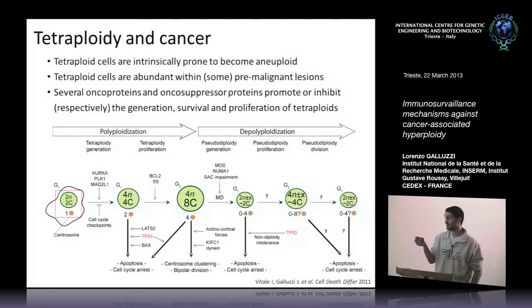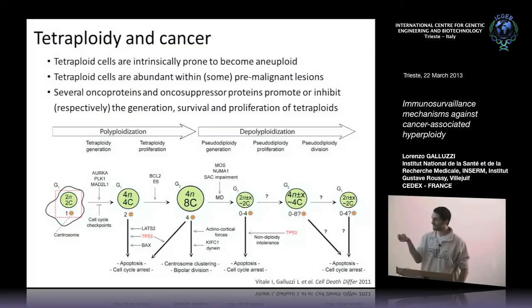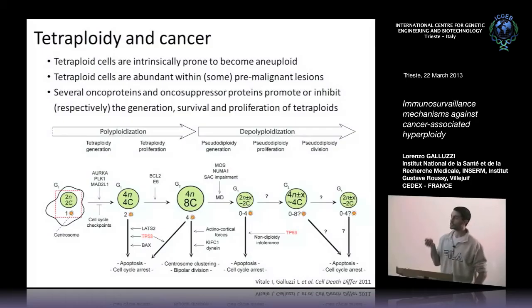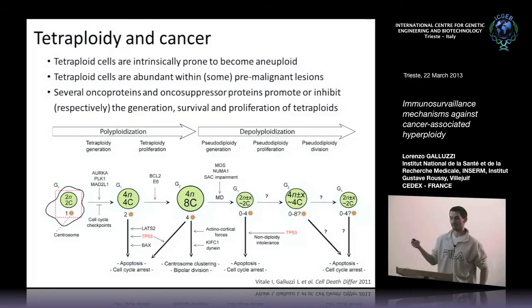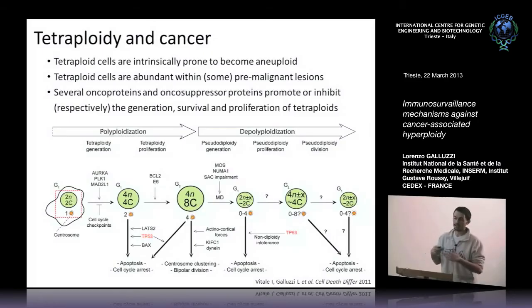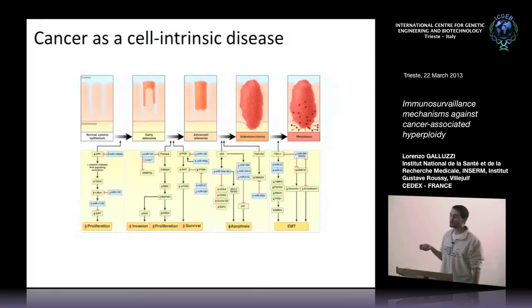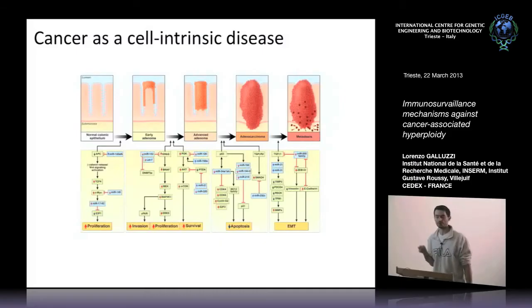An important thing to mention here is P53. As you probably know, P53 is a central regulator of oncogenesis — it's a tumor suppressor, and it is deleted, mutated, or inactivated in more than 50% of all cancers. The absence of P53 is required at the experimental level to generate tetraploid cells. If you try to tetraploidize a normal cell with a functional copy of P53, you will not succeed. One of the most common models of cancer is multi-step cancerogenesis, proposed by Vogelstein around the year 2000.